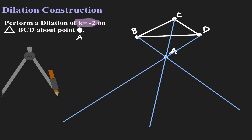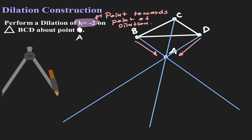Let's understand the direction of a negative scale factor. If the scale factor is a negative value, we are moving from the point towards the point of dilation and beyond. So B is going to get projected towards this direction, D towards this direction, and C towards this direction.